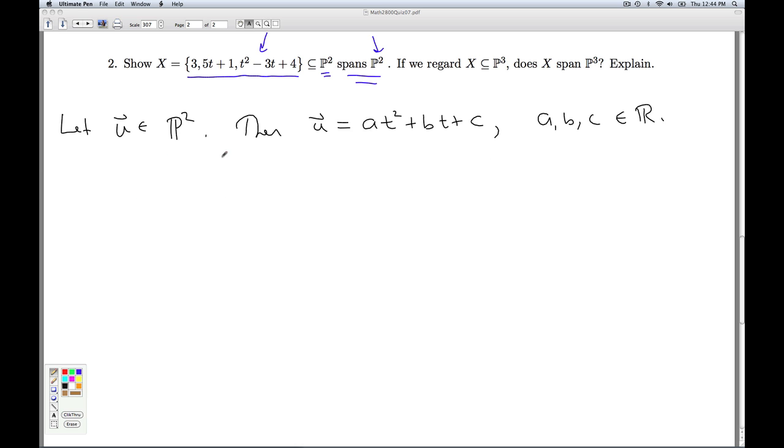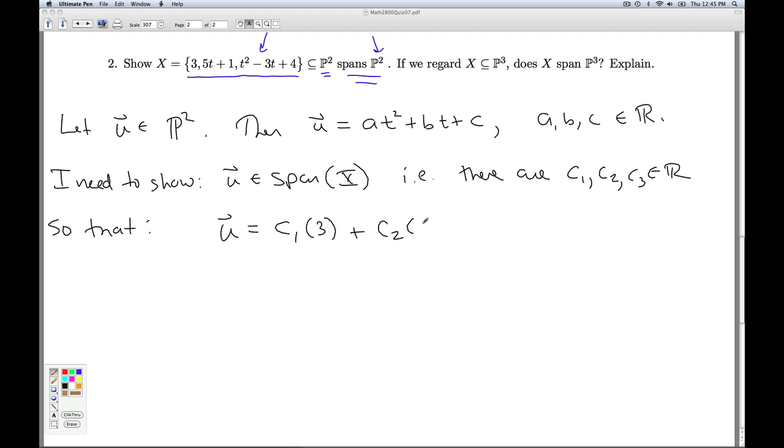So what do I have to show? I need to show that u is in the span of x. So I need to show that u is in the span of x, i.e., there are real numbers c1, c2, and c3 so that u equals c1 times 3 plus c2 times 5t plus 1 plus c3 times t squared minus 3t plus 4.